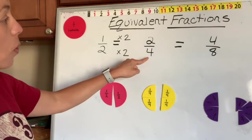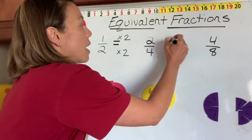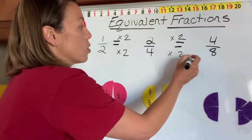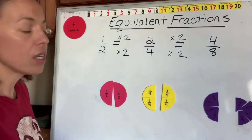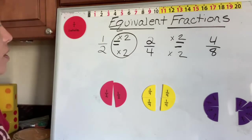We know that two fourths is equal to four eighths. Two times two is four. Four times two is eight. So we know that if we multiply the numerator and the denominator by the same number, we're going to get an equivalent fraction.